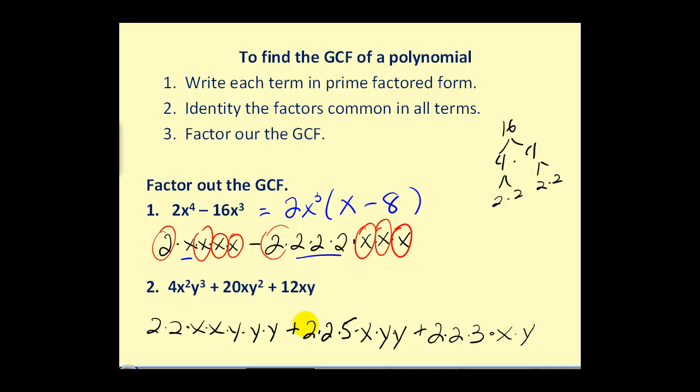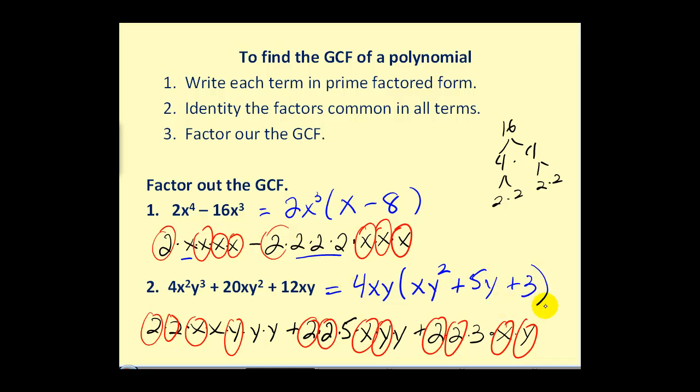Now, we circle all the factors in common among all three terms. They all have a 2 and another 2 in common, and they all have 1 factor of x and 1 factor of y. So, whatever we've circled represents the GCF. In this case, we'd have 4xy as our GCF. And whatever we haven't circled is what's left in our remaining expression. Here we have xy squared plus 5y plus 3. And we could easily check this if we wish.